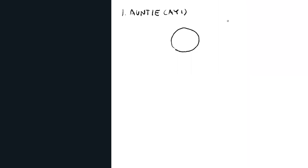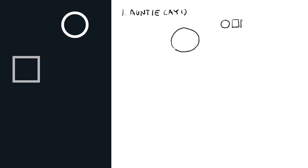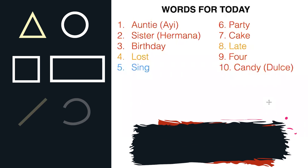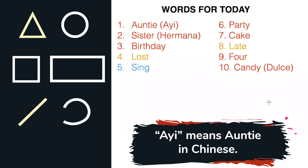We want to draw using very simple shapes: circles, squares, rectangles, triangles. So 'ii' means auntie in Chinese — you guys have all learned a new word today! So in this story, let's draw auntie, who's going to be a Chinese person.